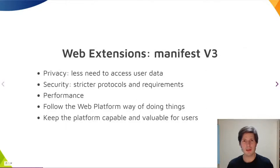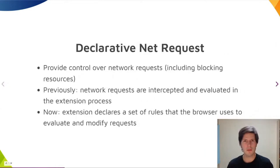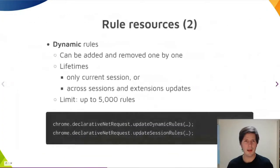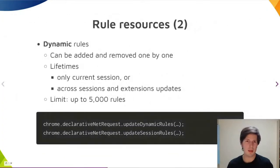As you know, the next iteration of the Web Extensions API is called Manifest v3, and one of its main features is declarative net request, which allows the extension to declare a set of rules and then ask the browser to evaluate and modify network requests on its behalf. Static lists of rules are bundled and distributed with the extension, and other rules can be added and removed dynamically one by one, but in a much smaller number.